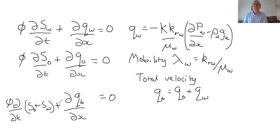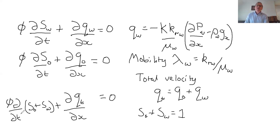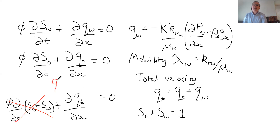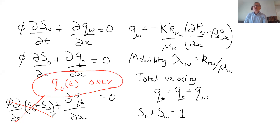If we look at this equation and assume two-phase flow, the pore space is filled with either water or oil, so S_O plus S_W equals one. Since one is a constant, it doesn't vary with time and that term disappears. So we get dQt/dx equals zero, for which the solution in general is that Qt is a function of time only — it doesn't vary in space.